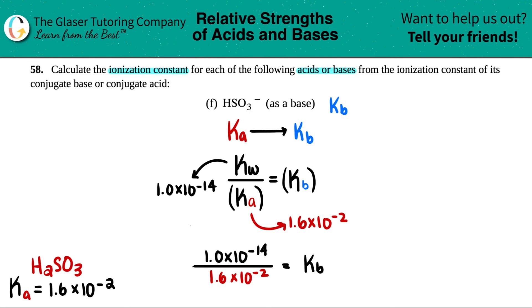Calc is out. 1 times 10 to the negative 14th divided by 1.6 times 10 to the negative, did I say negative 12th? I meant negative 2. 2 sig figs.